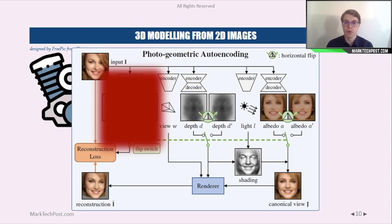The canonical view is then introduced as input to the renderer, which takes the canonical view, the view, and the depth to reconstruct the image. The two reconstructed images are produced thanks to flipping the depth and the albedo, as you can see in the schema.